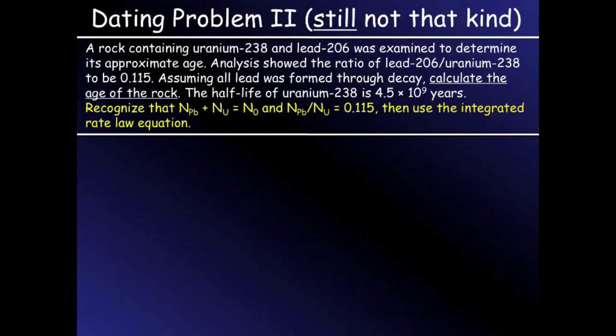So hopefully you're beginning to see a pattern, and you know how to initially attack this problem. We need to solve for the age of the rock, so we need to solve for time. We're going to need the integrated rate law. To use the integrated rate law, we need the decay constant, and we can get the decay constant from half-life.